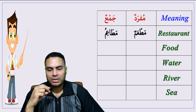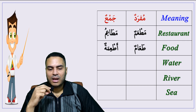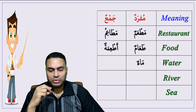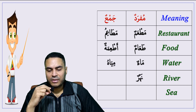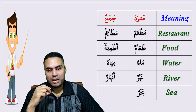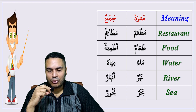Food — ta'amun, plural: at'ima. Water — ma'un — yes, we have a plural for water: miyah. River — nahurun, its plural... Sea — bahrun, plural: buhur.